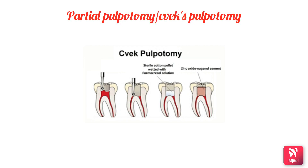Partial pulpotomy, also known as the Cvek pulpotomy, involves removal of coronal pulp tissue to the level of healthy pulp and is usually indicated in young permanent teeth with incomplete root formation. After anesthesia and rubber dam placement, a 1–2 mm deep cavity is prepared into the pulp using a diamond burr. A wet cotton pellet is used to control hemorrhage, then a thin coating of calcium hydroxide mixed with saline is placed, and the excess cavity is sealed with IRM (intermediate restorative material).